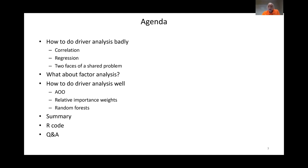Now I'm going to talk about some ways to do driver analysis badly. One of the reasons I moved toward conjoint analysis years ago was because the driver analysis methods available weren't very good. We'll talk about correlation and regression — two sides of the same bad coin — and explain the technical reasons why. We'll also touch on factor analysis as a red herring, then discuss better methods, share some R code, and do Q&A.